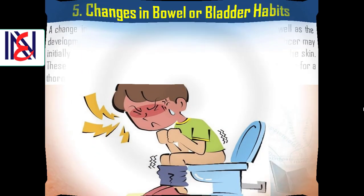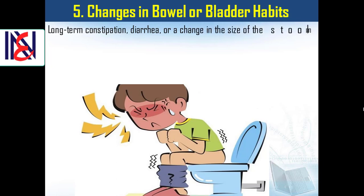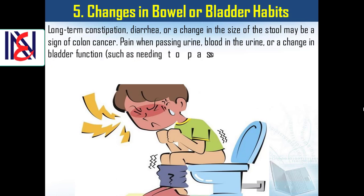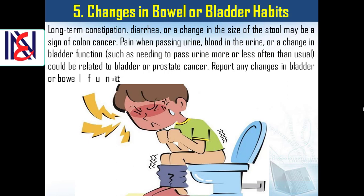5. Changes in bowel or bladder habits. Long-term constipation, diarrhea, or a change in the size of the stool may be a sign of colon cancer. Pain when passing urine, blood in the urine, or a change in bladder function — such as needing to pass urine more or less often than usual — could be related to bladder or prostate cancer. Report any changes in bladder or bowel function to a doctor.